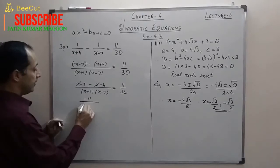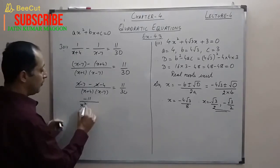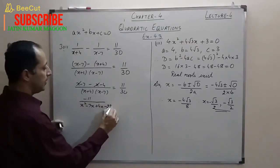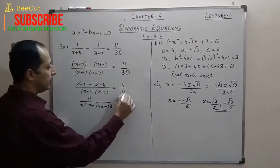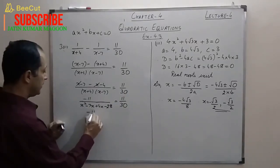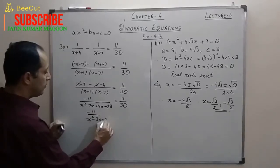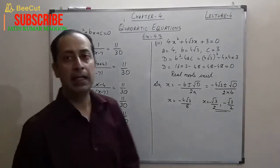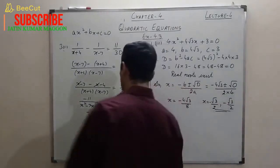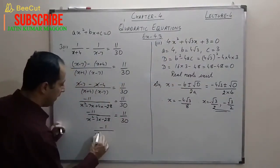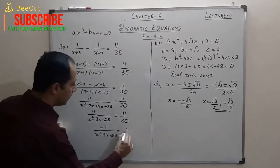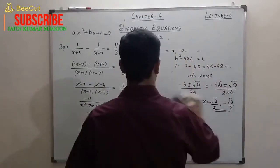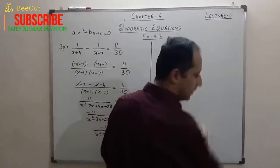Simplifying: the numerator is −11, and expanding the denominator: x²−7x+4x−28 = x²−3x−28. So we have −11/(x²−3x−28) = 11/30. Since 11 appears on both sides, it cancels, giving −1/(x²−3x−28) = 1/30. Cross-multiplying gives us the quadratic equation.